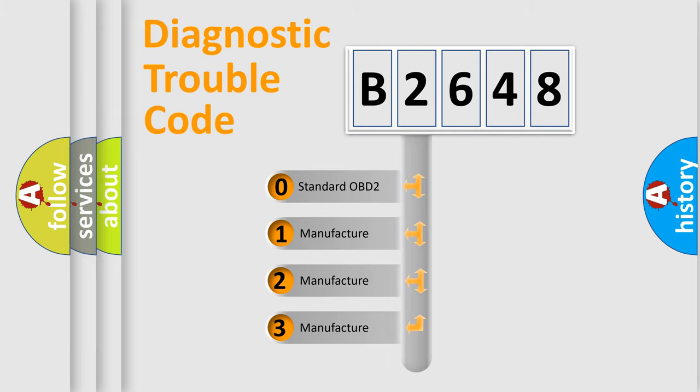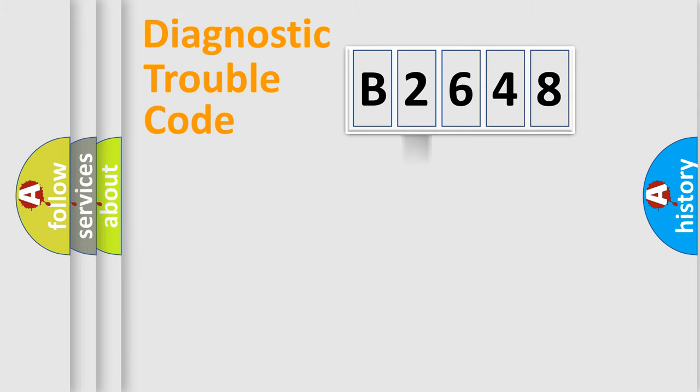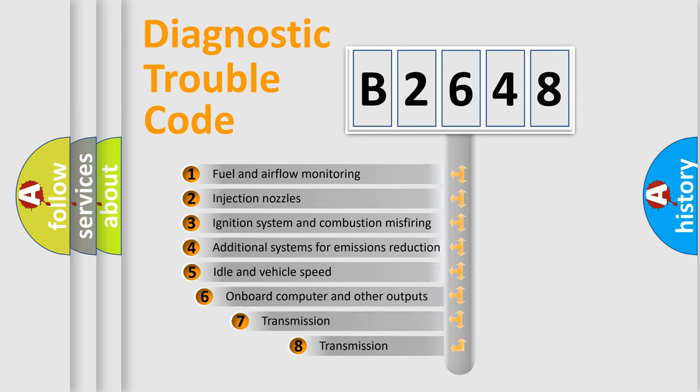If the second character is expressed as zero, it is a standardized error. In the case of numbers 1, 2, 3, it is a car-specific error expression from the manufacturer.